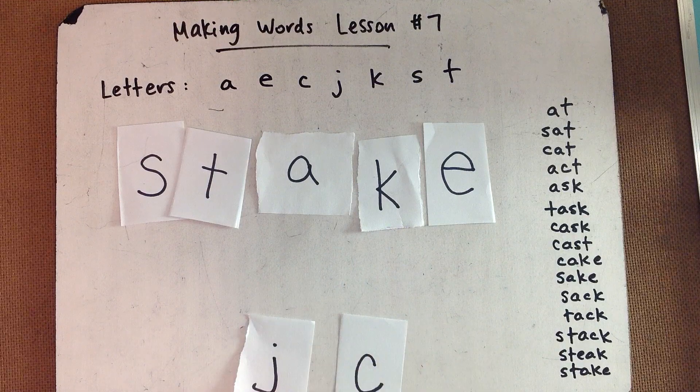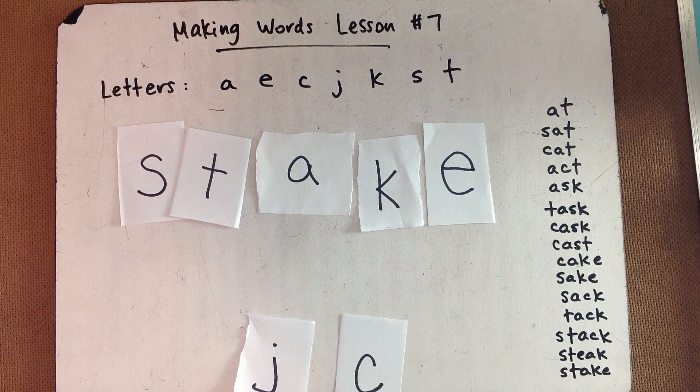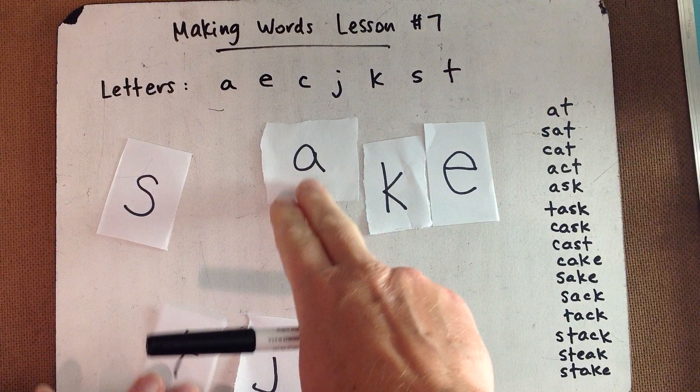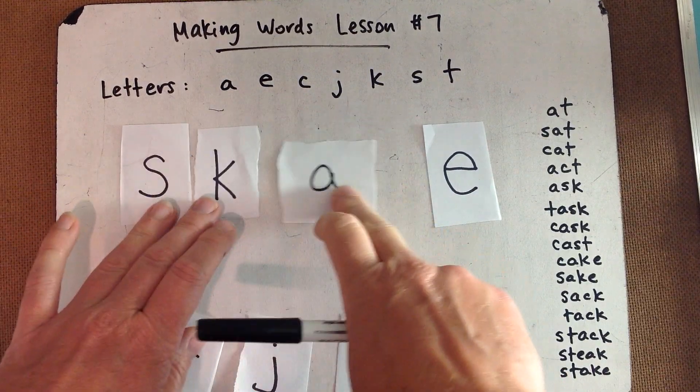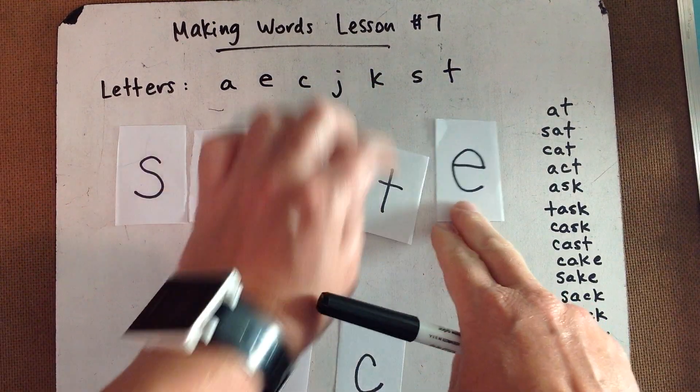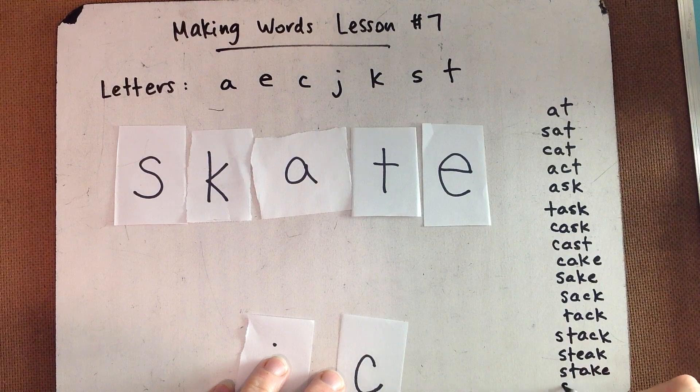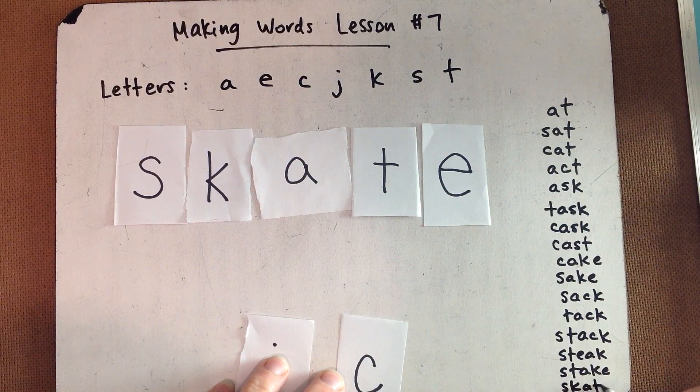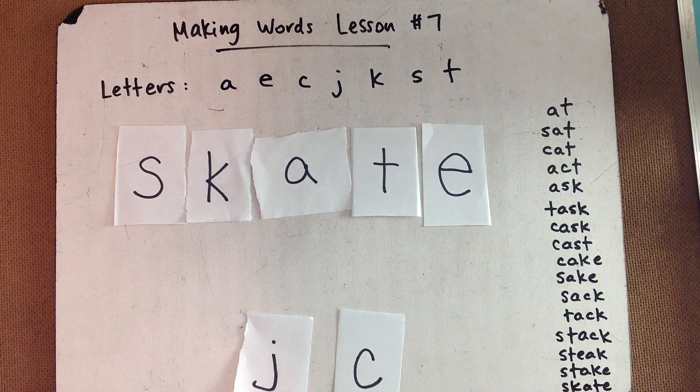Now, rearrange those letters. Can you spell skate? So now instead of an S-T blend at the start, we have an S-K blend. S-K-A-T-E. Skate.